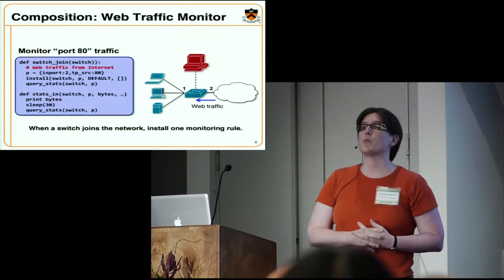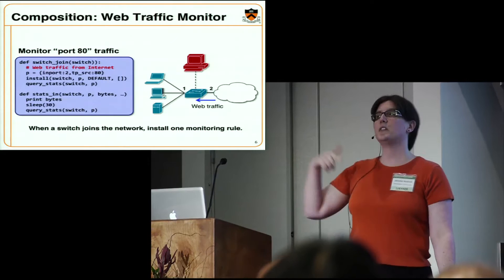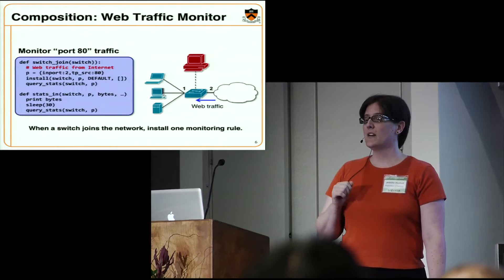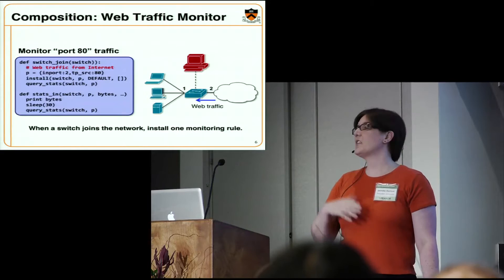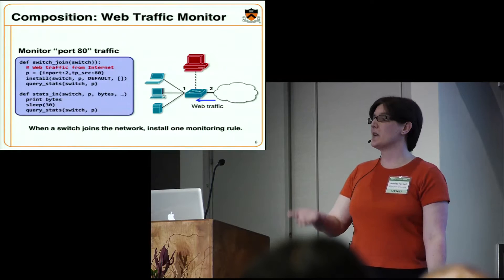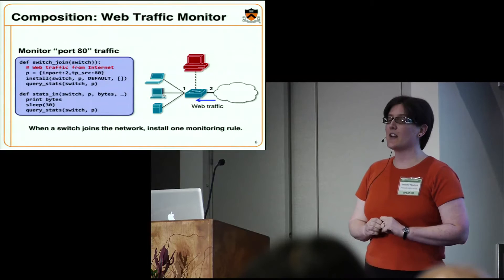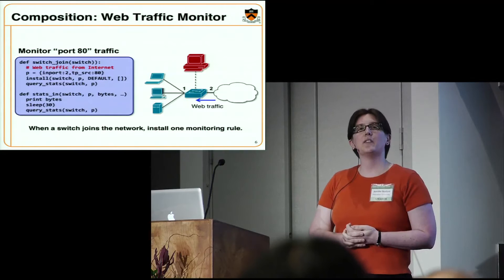Now suppose I want to monitor web traffic — port 80 traffic coming from the Internet. The pattern I want to match is that the packet comes in from the external Internet and the source port number is 80 for HTTP. I want to install a rule for that case to monitor the traffic. I don't have any particular forwarding action — I just want to use the counters that already exist in the switch to count the number of packets and bytes representing web traffic coming from the Internet. Every 30 seconds I would query the network to read those counters and print the results.